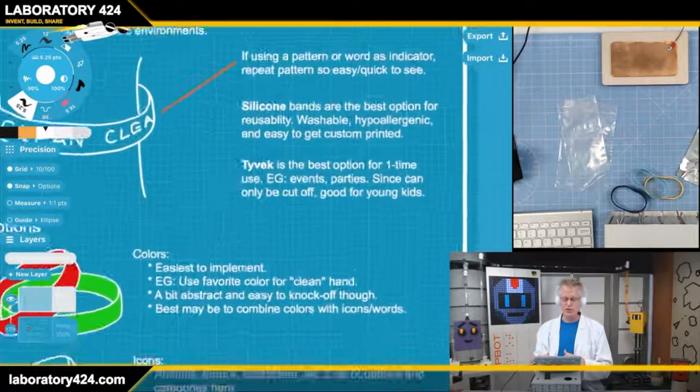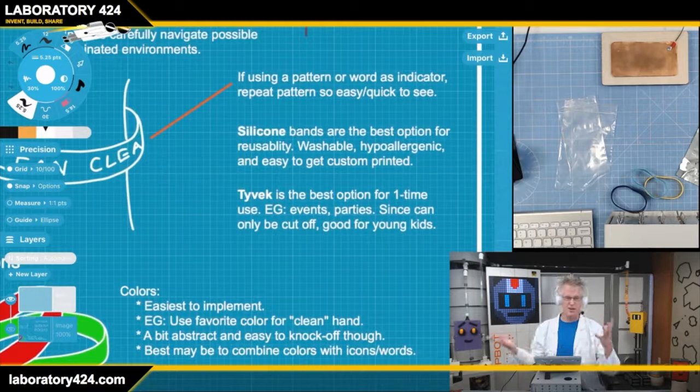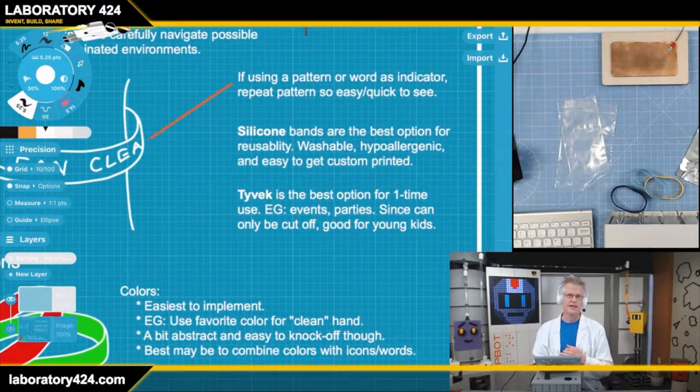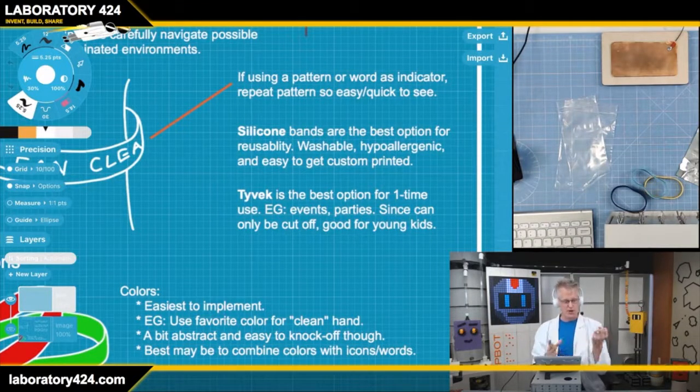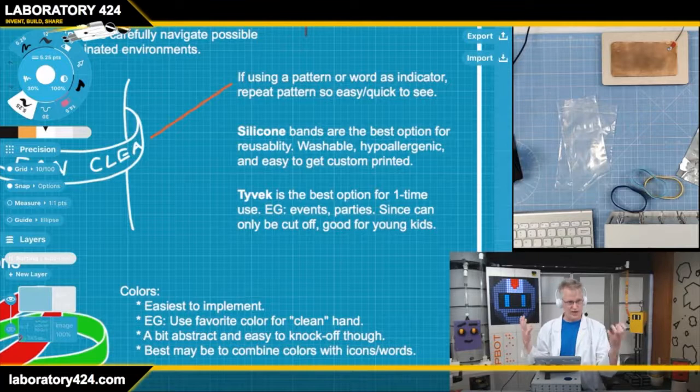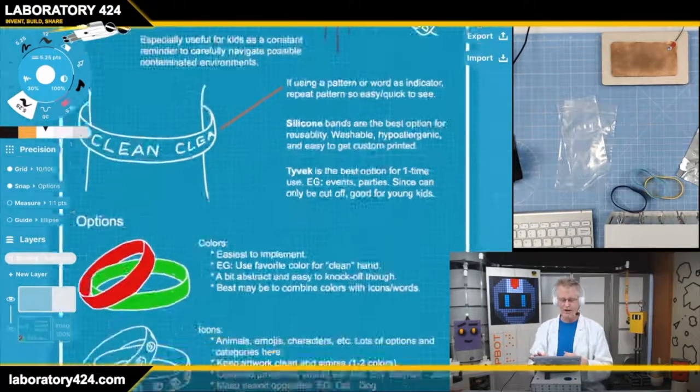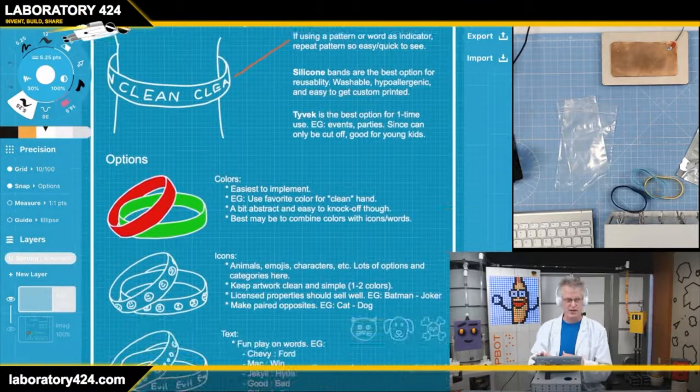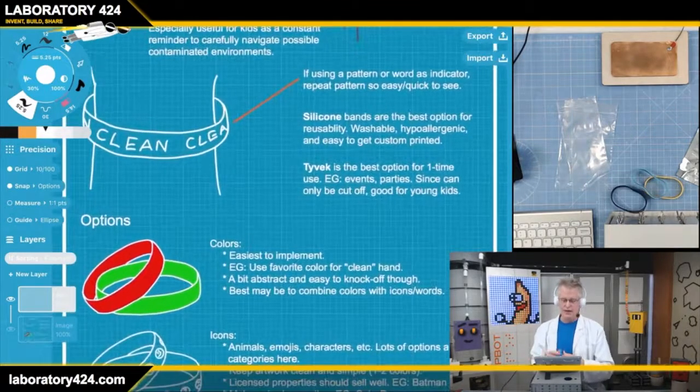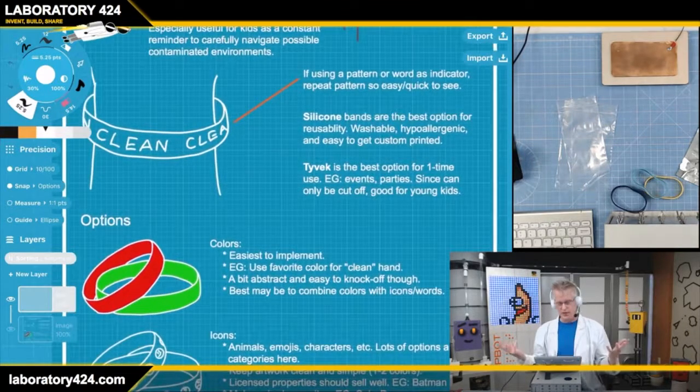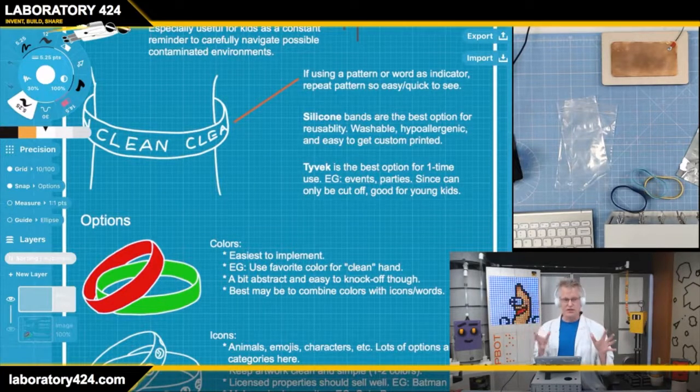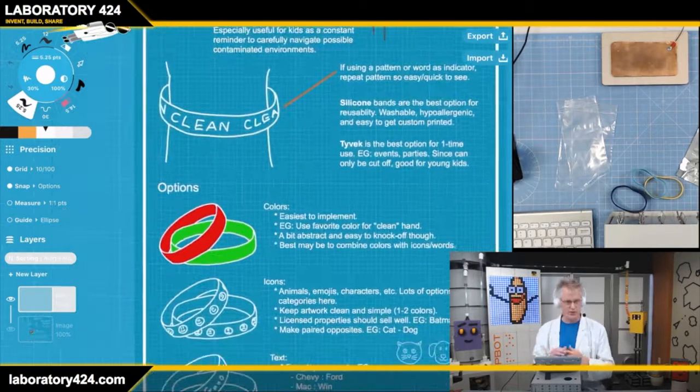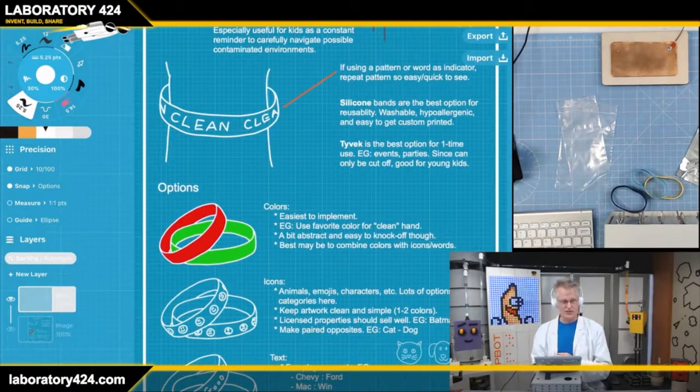But the neat thing about this is that it's really, really simple and really inexpensive to get involved with this. So I started talking about some options. So we could do silicone bands or Tyvek. Tyvek would be good for events, right, concerts or, well you can't do those right now really, but you get it, right, events, parties, whatnot. So you put them on little kids or whatever and say, hey, this is your dirty hand, this is your clean hand. And they're going to ask some questions why that is. Silicon is reusable, it's washable, and you can stylize it really nicely.